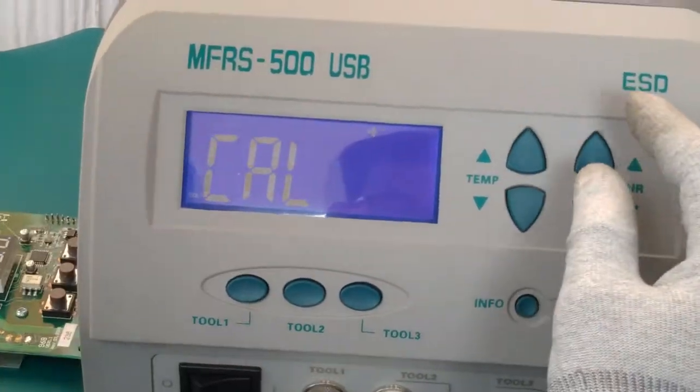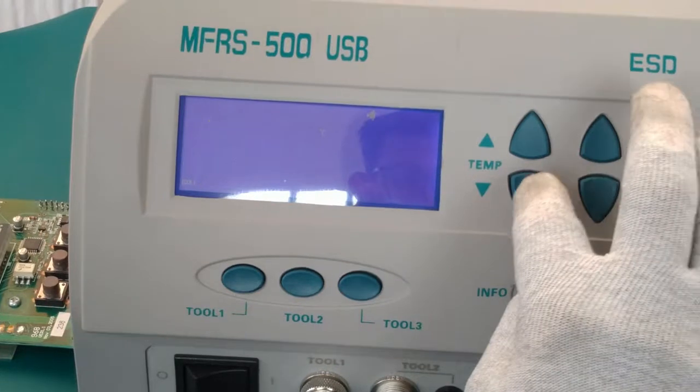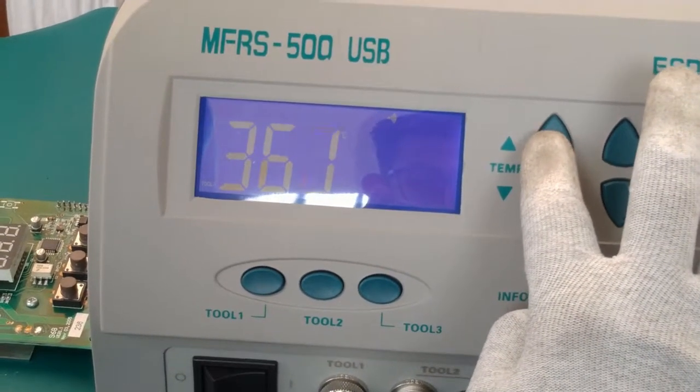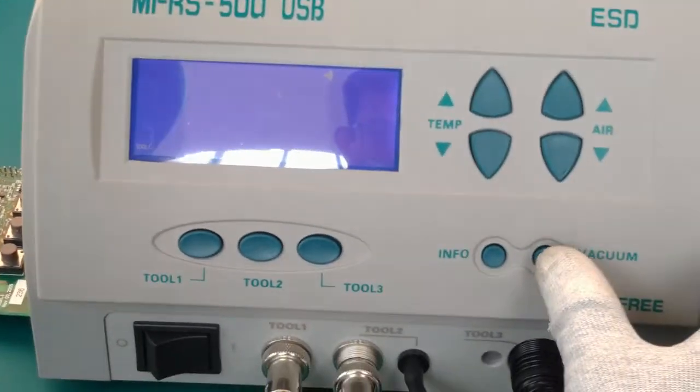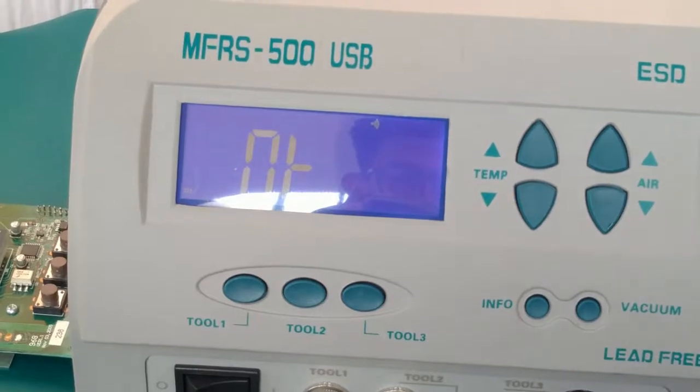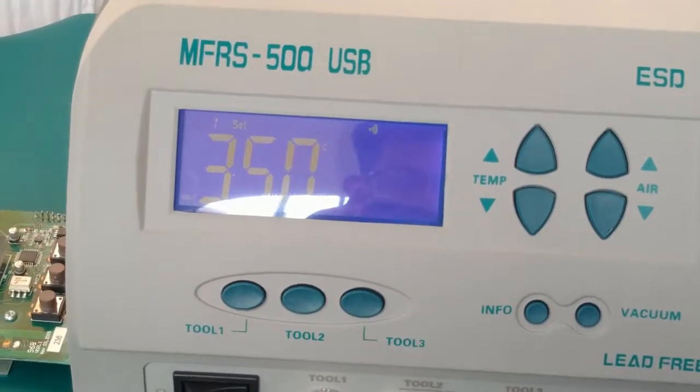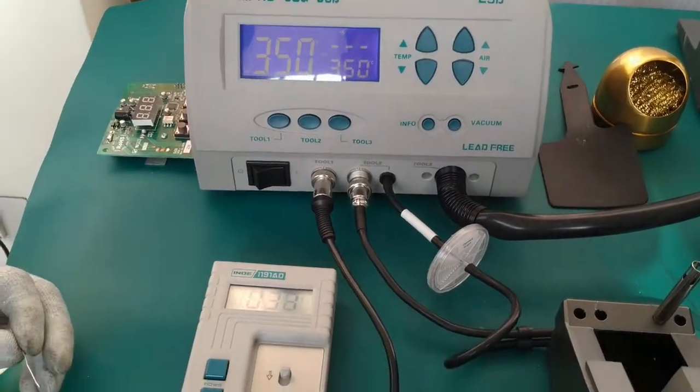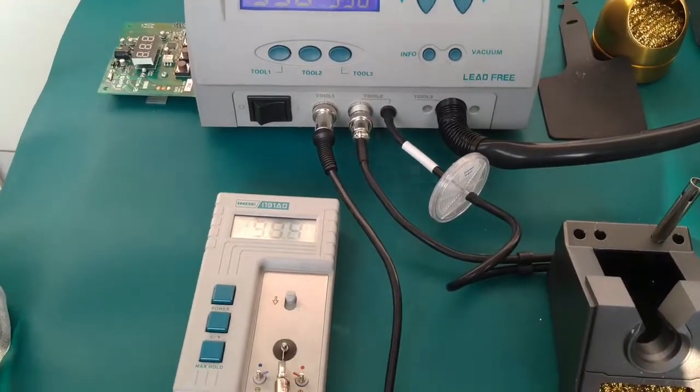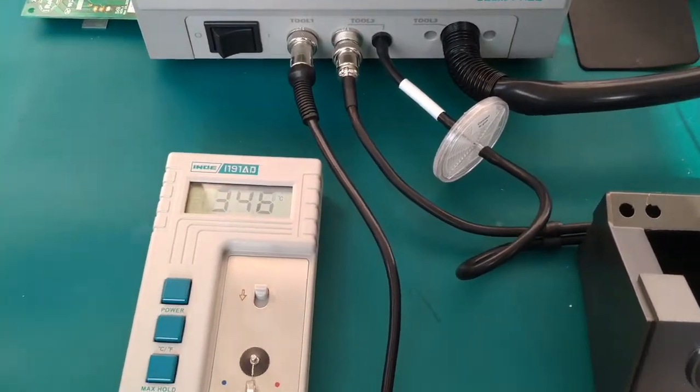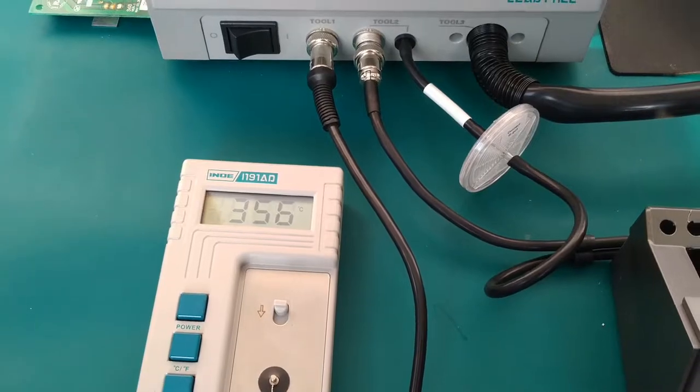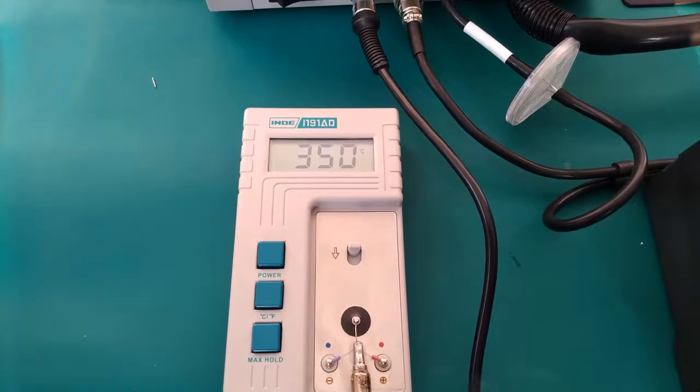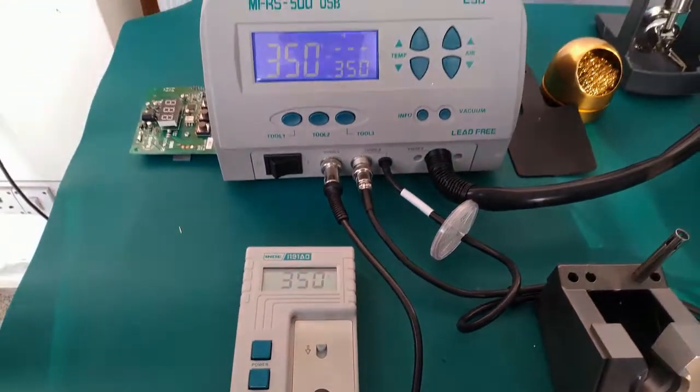Now the offset value is accepted. We will verify the temperature. The offset value is the same and the soldering iron has been calibrated.